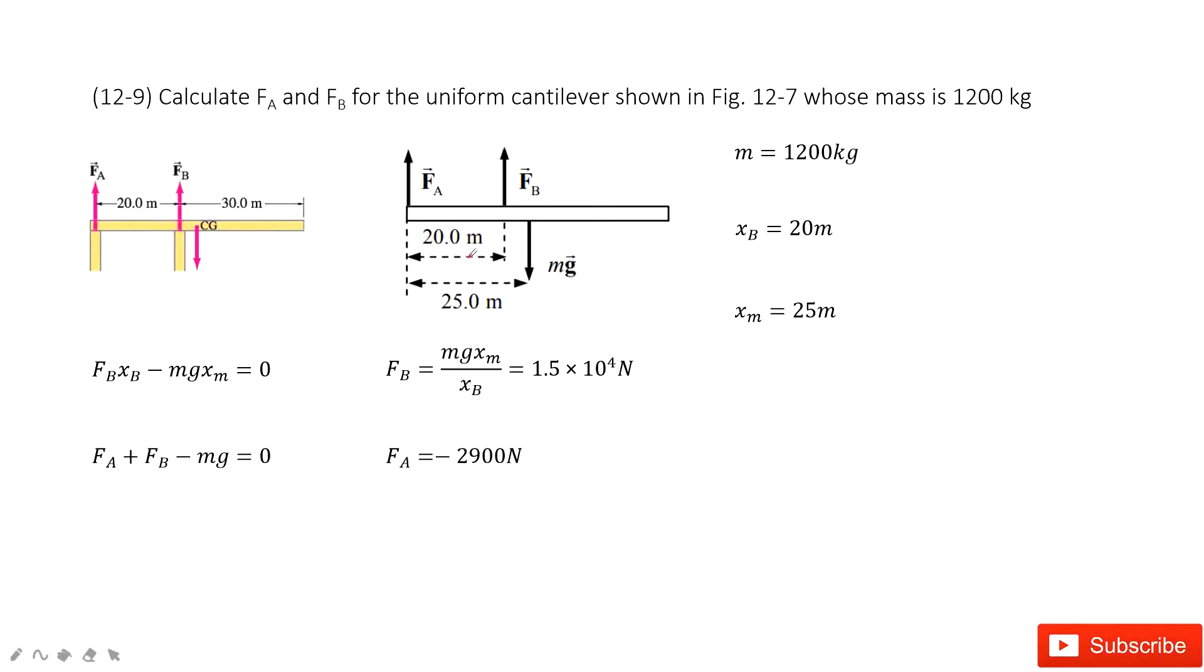Now we look at the system. We can see we have three forces: FA, FB, and MG. The mass is given, the distance for each force to the fixed point is given. This one we consider as a fixed point rotation axis.